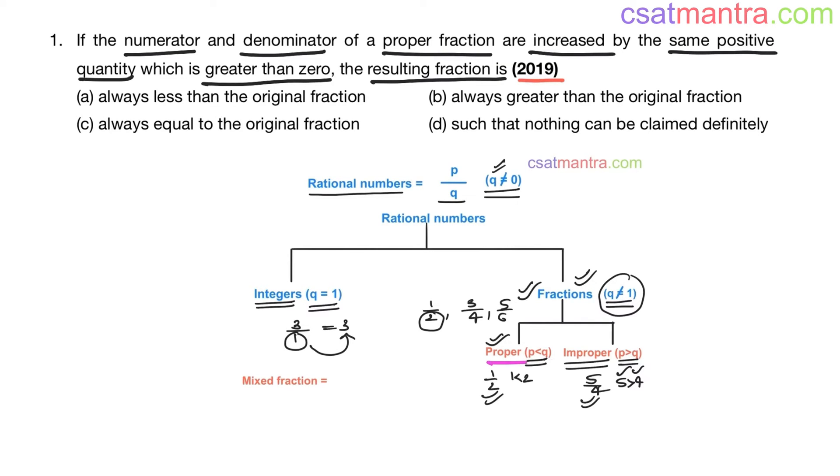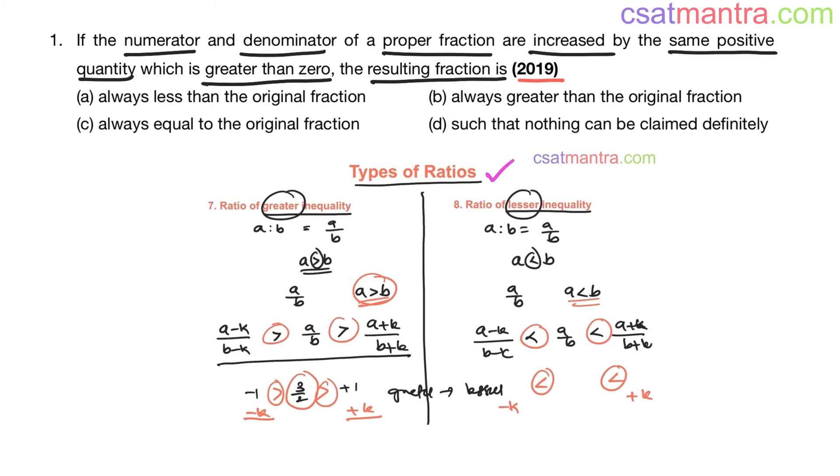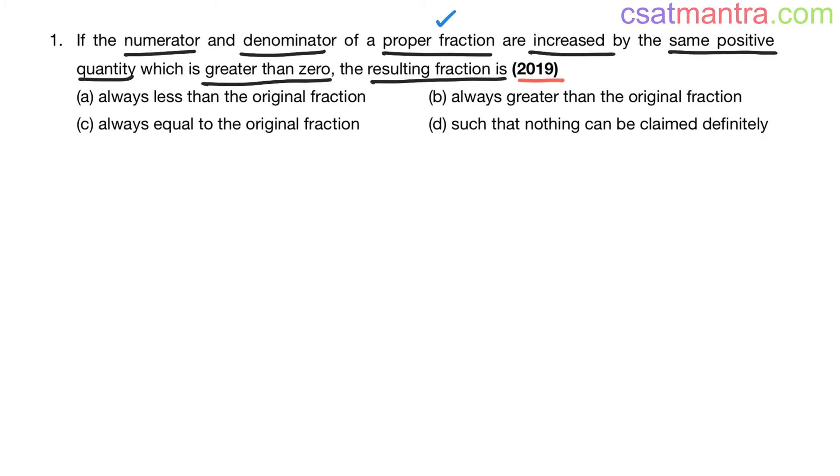And in types of ratios lecture from ratios and proportions chapter, when a proper fraction is increased by same positive quantity k in numerator and denominator, how the inequality will be. I request you to kindly know all types of numbers because to solve this problem, you need to know what a proper fraction is. All types of numbers are very important, and then types of ratios. Kindly go through this lecture also. Now, coming back to the question, let's see what the fraction is.